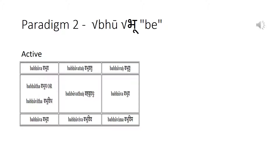Let us take the very common root 'bhū' (be). Only active forms are seen in practice. There is only one stem: 'babhū'.